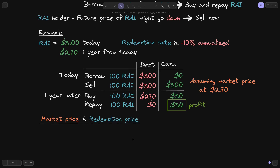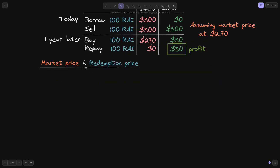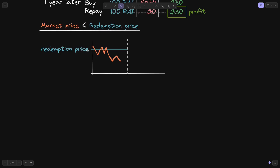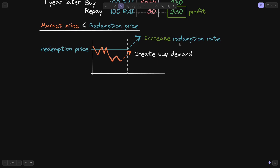Now let's look at how the Rye protocol incentivizes participants to bring the market price closer to the redemption price when the market price is below the redemption price. In this case, we need to bring the market price up by creating buy demand. The way the Rye protocol creates buy demand is by increasing the redemption rate.